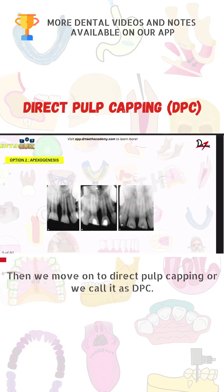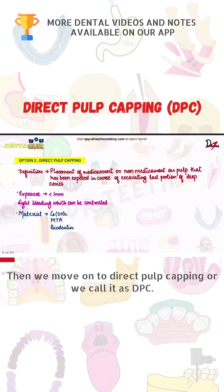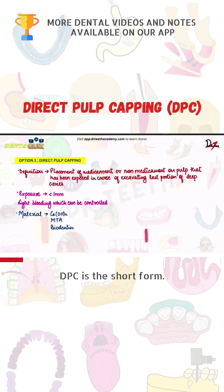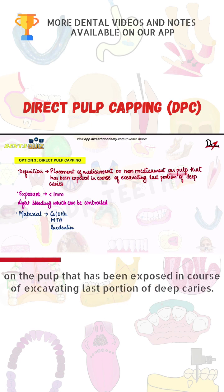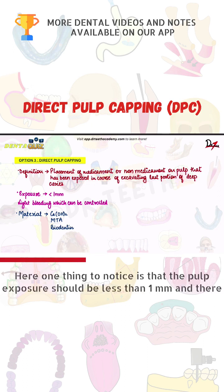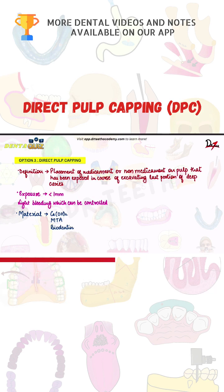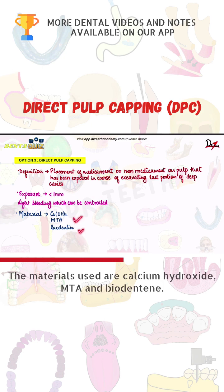We move on to direct pulp capping, or DPC. By definition, it is the placement of a medicament or non-medicament on the pulp that has been exposed in the course of excavating the last portion of deep caries. The pulp exposure should be less than 1 mm and there should be light bleeding which can be controlled. The materials used are calcium hydroxide, MTA, and biodentine.